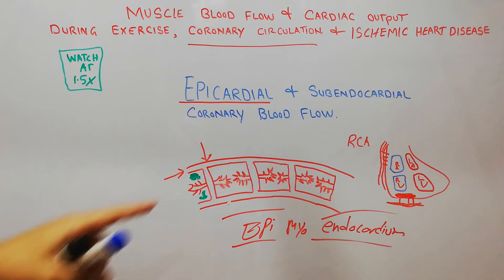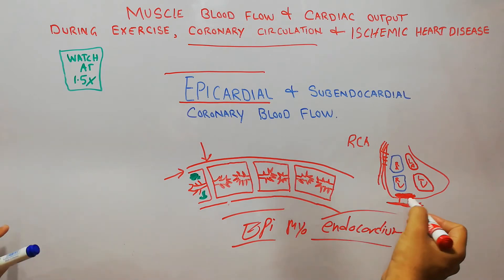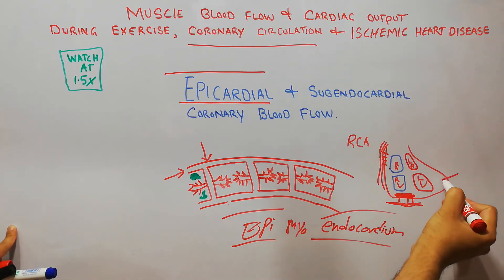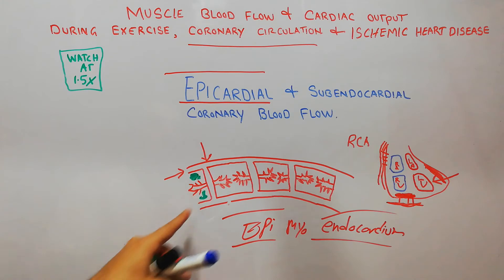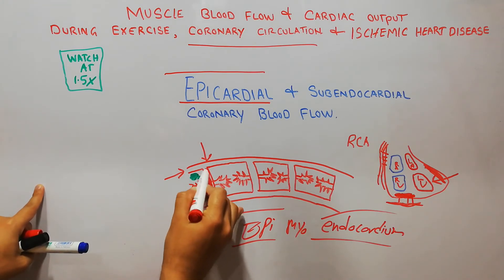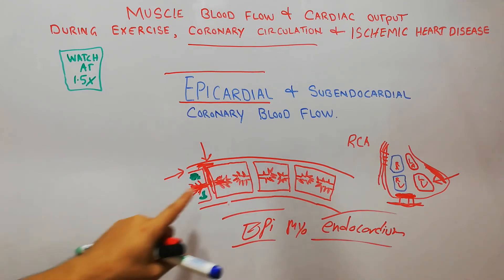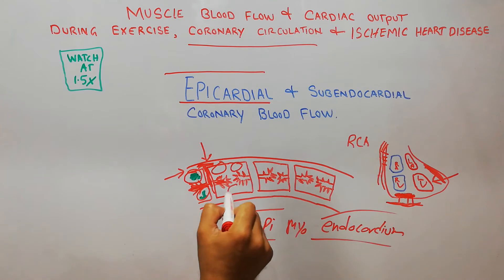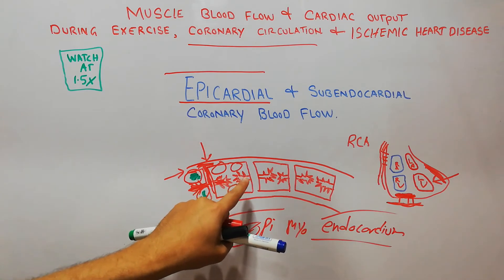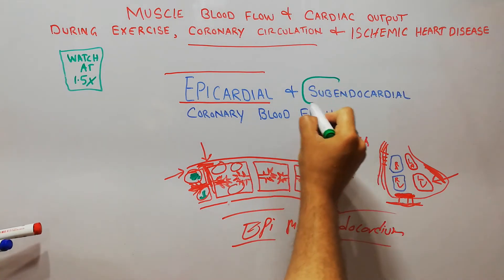The outer blood vessels are the epicardial vessels, present outside the heart. Branches penetrate deep inside the muscles — these are the intramuscular penetrating branches — and they are connected with the subendocardial coronary blood vessels. So the blood flow pattern goes from epicardial vessels through intramuscular branches to the subendocardial coronary blood vessels.